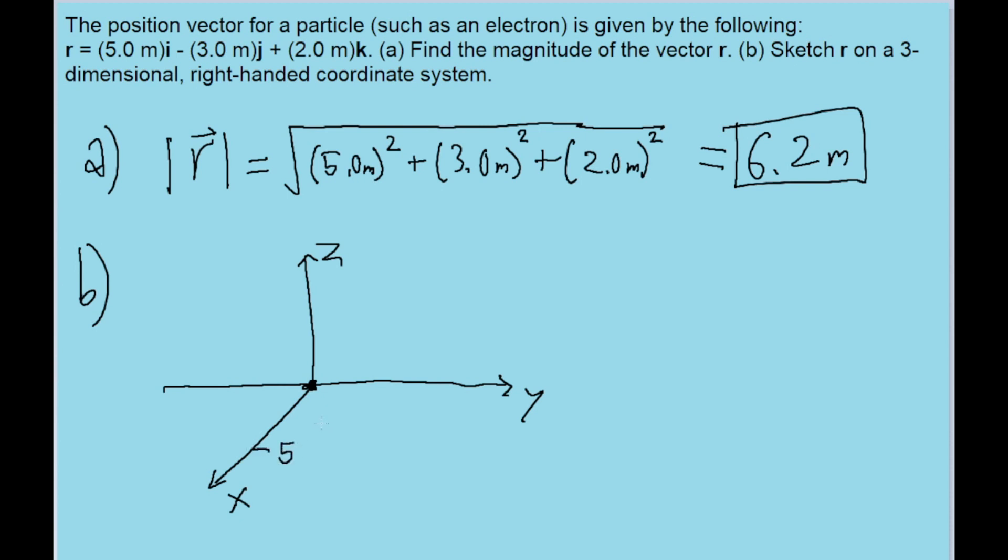And then in the j-direction, which corresponds to the y-axis, there's a negative 3. So somewhere over here on the opposite side, on the negative side of the y-axis, there's a 3.